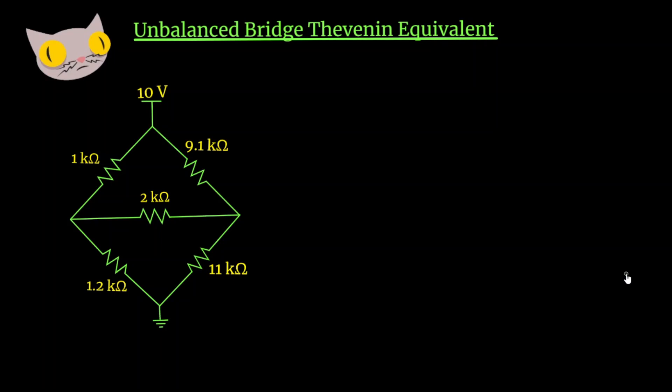Today let's look at an unbalanced bridge circuit and simplify it using Thevenin's theorem to find its equivalent circuit. So we have R1 here, R2 is the 1.2k ohms.